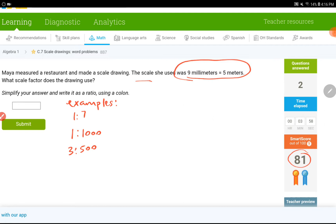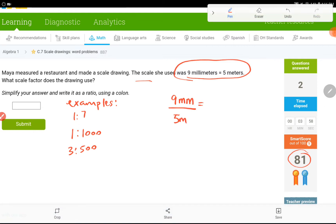Okay, what I have is 9 millimeters to 5 meters. So, I want to have the same unit in the end, so I can just drop the units and then figure out what the ratio is.